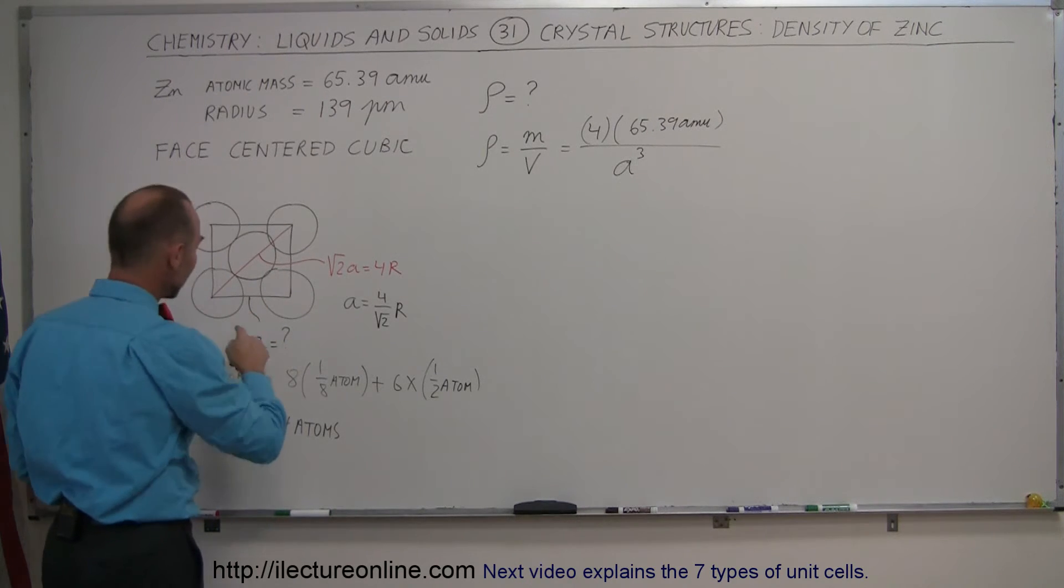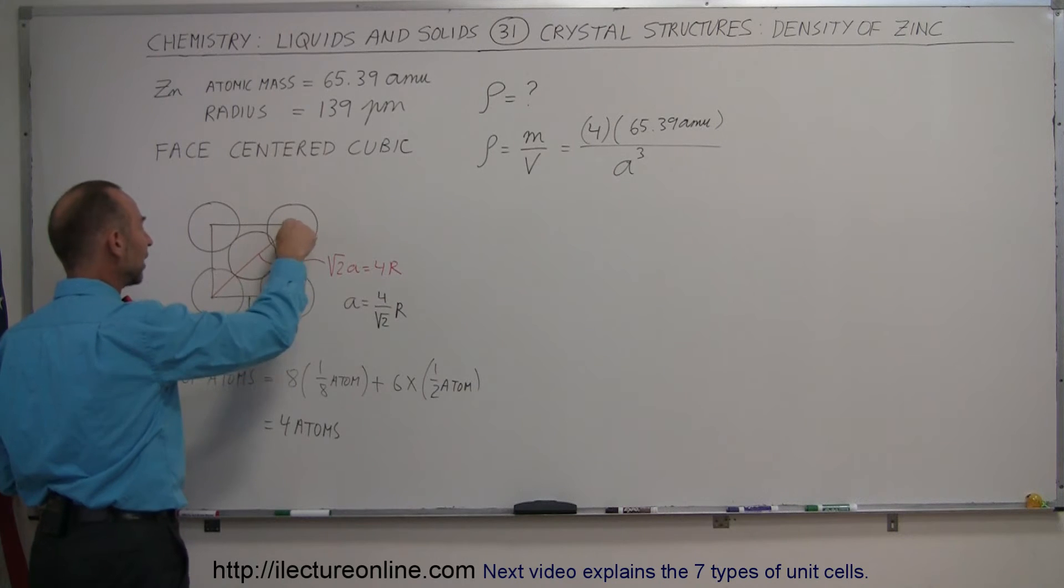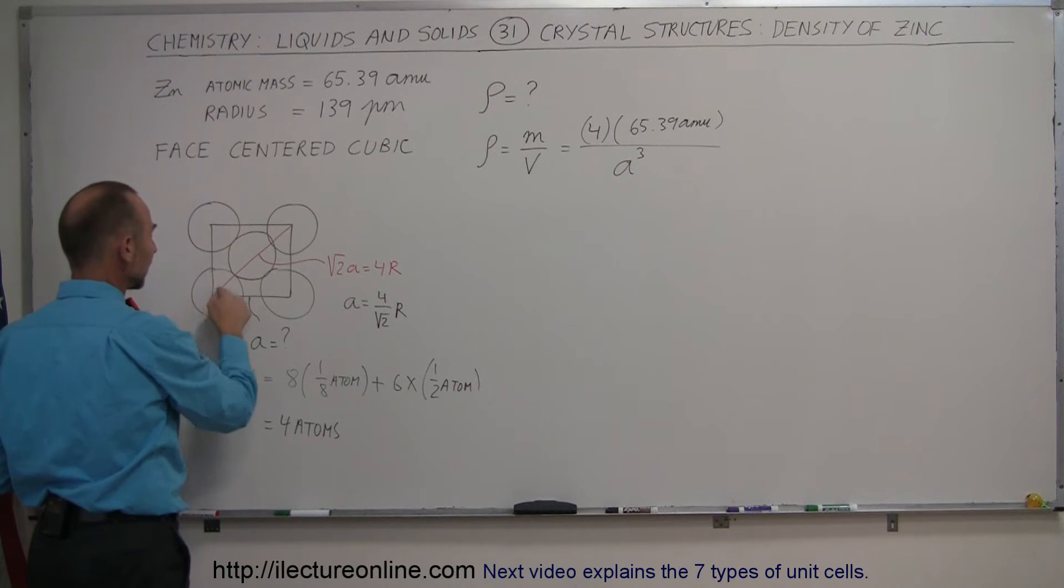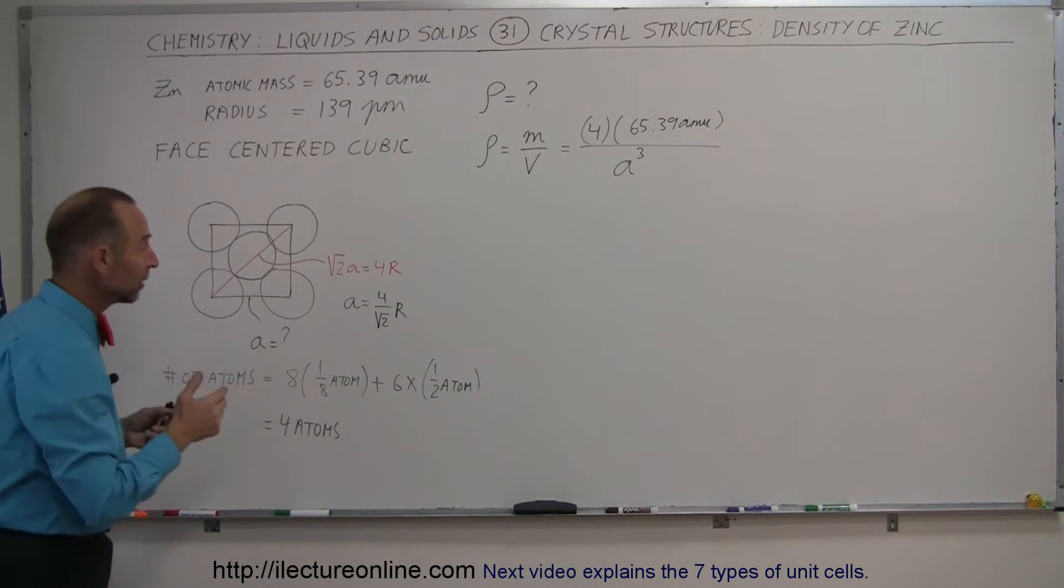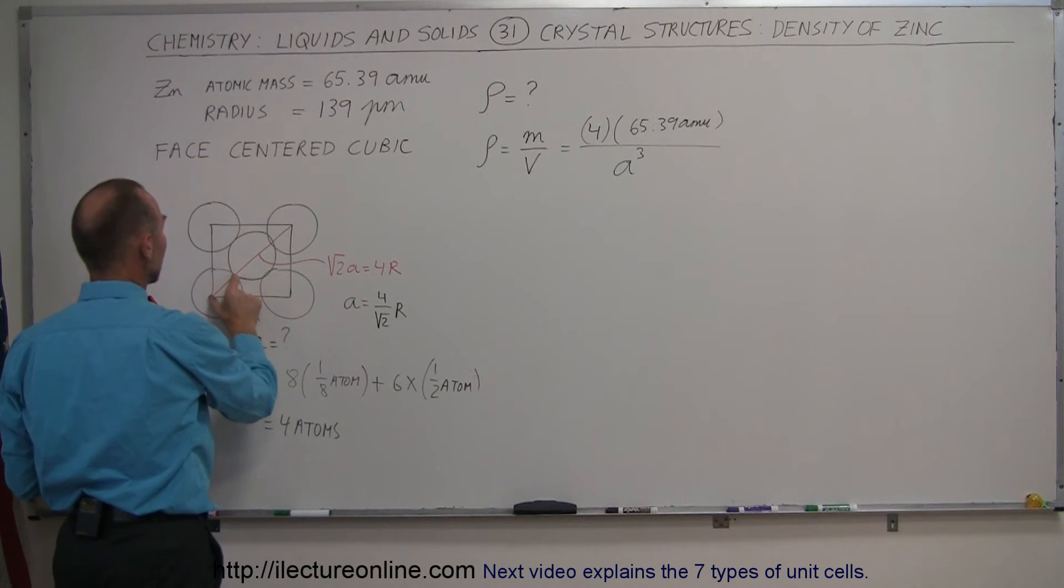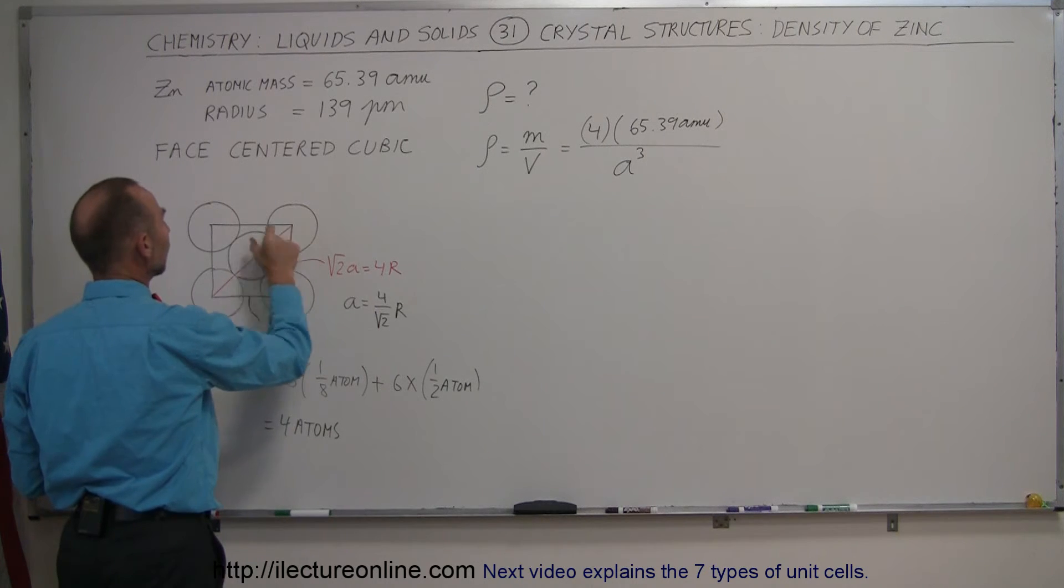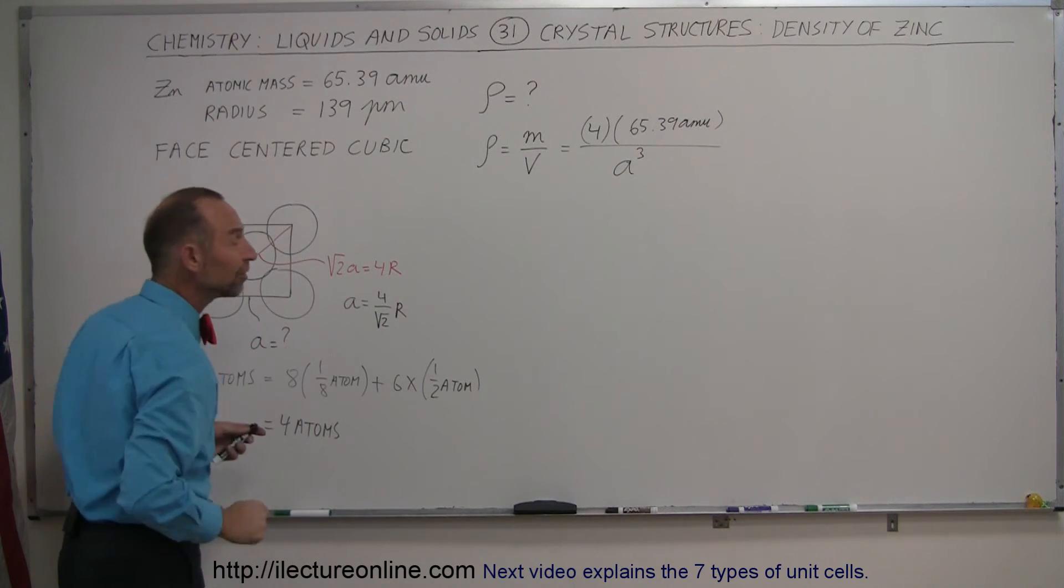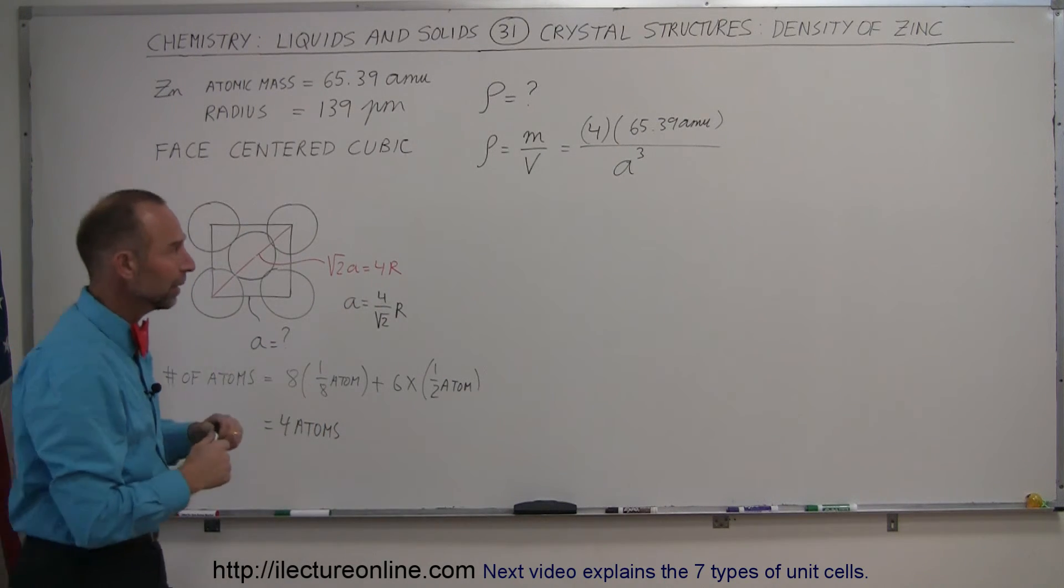The best way to think about it is to go diagonal across one of the sides, because there we have one atom at the corner, one atom at the corner, and one smack in the middle, so that they all make contact along the diagonal of one of the faces. The diagonal is equal to the square root of 2 times A, and that will then be equal to four times the radius, 1, 2, 3, 4 times the radius of the atom, so that the A, the side, is equal to four divided by the square root of 2 times the radius of an atom. And that needs to go in there.